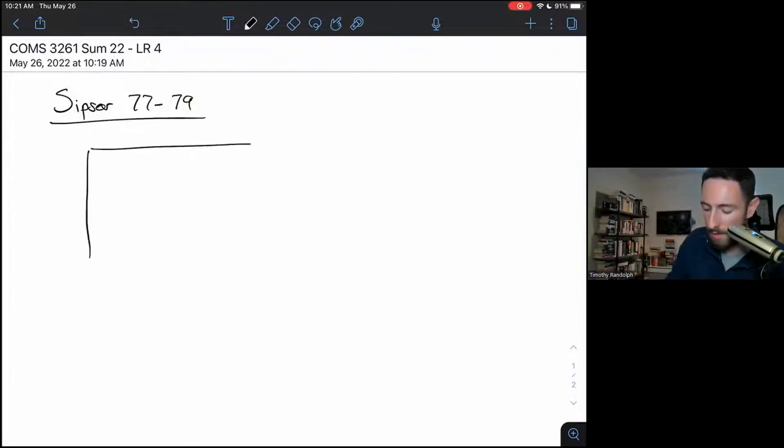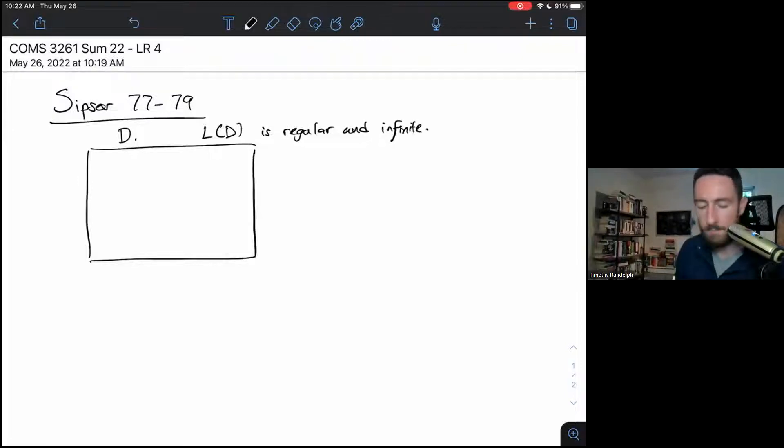So let's get started. I'm going to draw a DFA, D, and I'm going to specify that the language of D is regular and infinite. So here's D. It's a DFA. It's got a bunch of states. Maybe it's got a couple accept states. It's definitely got a bunch of transitions between states.